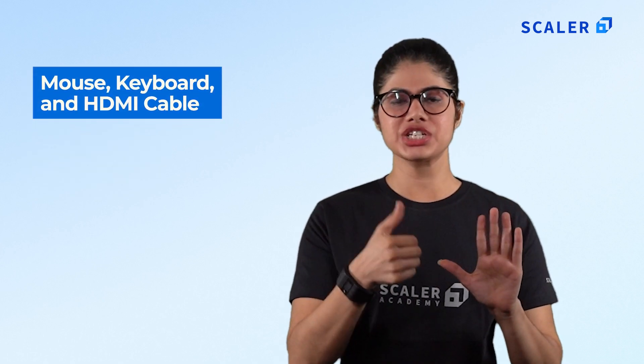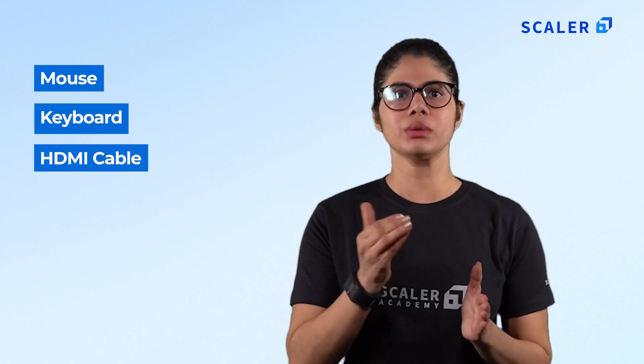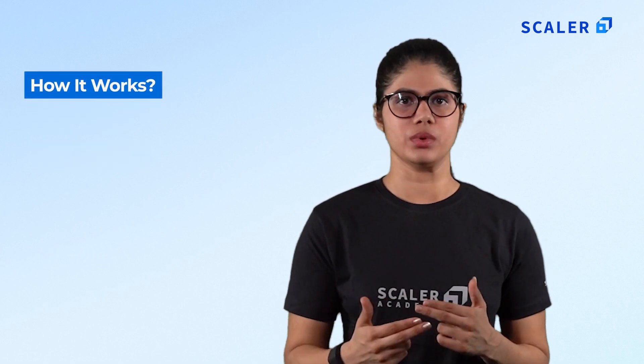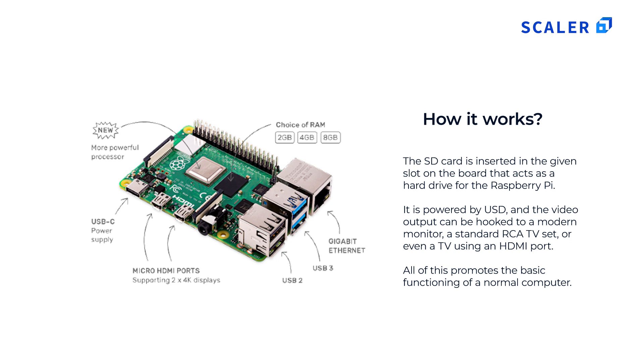Fifth, mouse, keyboard, and HDMI cable. Depending on the project you are working on, you will need a mouse, keyboard, and HDMI cable. Here is how it works: the SD card is inserted into the given slot on the board, acting as a hard drive for the Raspberry Pi. It is powered by USB, and the video output can be hooked to a modern monitor, a standard RCA TV set, or a TV using an HDMI cable. Importantly, the best Raspberry Pi includes power consumption as low as 3 watts — meaning you can run up to 30 Raspberry Pis in place of a standard light bulb.